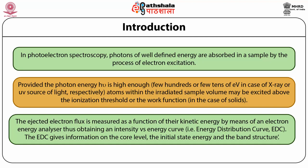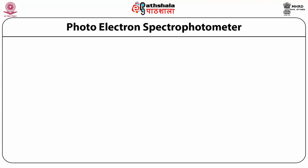The EDC gives information on the core level initial state energy and the band structure. A photoelectron spectrometer consists of a light source, an electron gun, an energy analyzer, a high vacuum environment, and an electron detector.